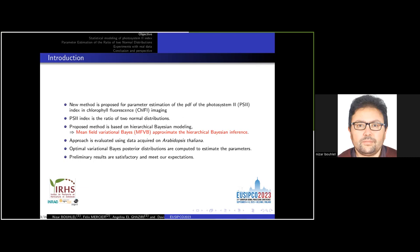The optimal variational Bayes posterior distributions are computed and then used to estimate the parameters. The preliminary results on the parameter estimation are satisfactory and meet our expectations.